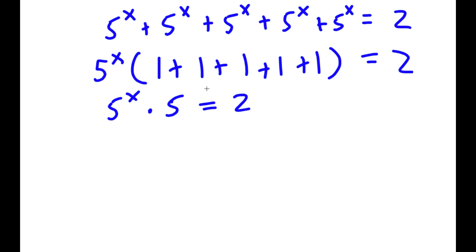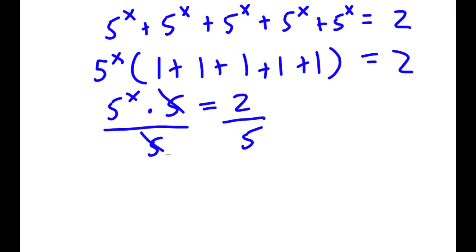Now I can divide by 5 on both sides. So then by dividing by 5, these two will cancel out, and I will be left with phi to the power of x is equal to 2 over 5.